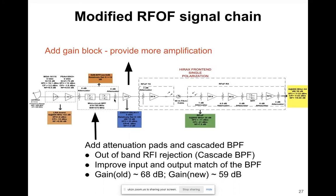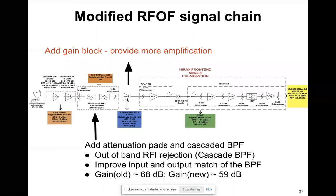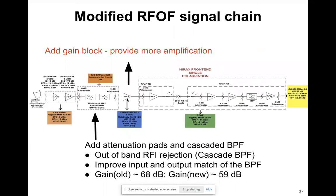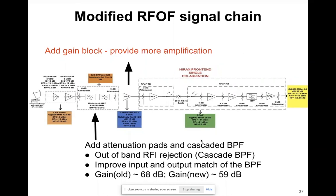We plan to add an extra amplifier with a higher dynamic range to provide more amplification. However, we will also trade off on overall gain so that we can at least get usable data, because at the trial site there is too much RFI and it's not certain we will get away with it.